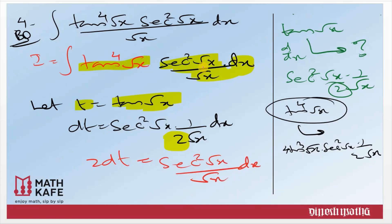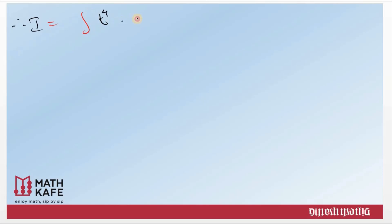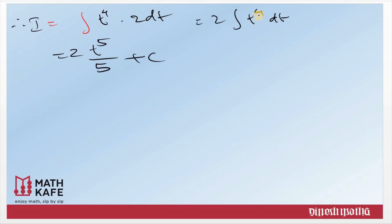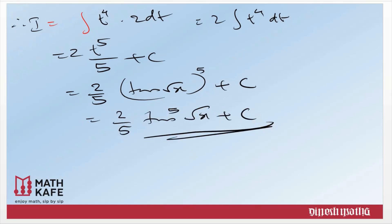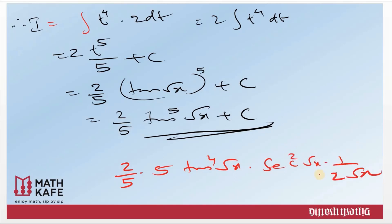Therefore I becomes the integral of t⁴ · 2 dt, which equals 2 · integral of t⁴ dt, giving 2 · t⁵/5 plus C. Replace t with tan(√x): the answer is (2/5) tan⁵(√x) plus C. Cross checking by differentiating: (2/5) · 5 tan⁴(√x) · sec²(√x) · (1/(2√x)). The 2, 5, and 2 cancel, leaving tan⁴(√x) · sec²(√x) / √x — that is exactly our question, so we are right.